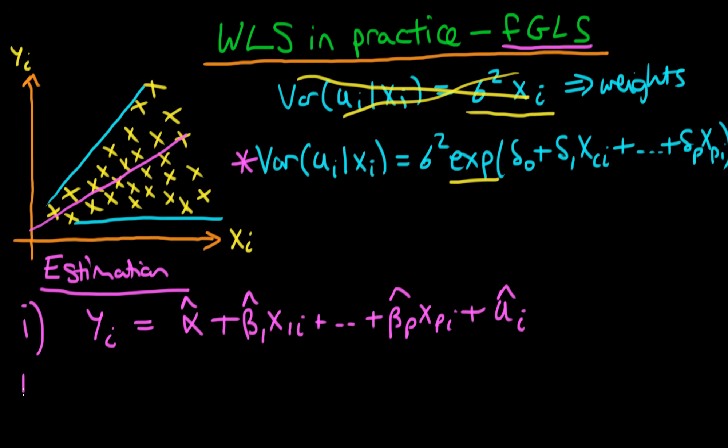The second step is to then run a regression of the log of these estimated errors, but it's not just the log of the estimated errors, it's the log of the estimated errors squared. We run a regression of that on the various x variables, so that's delta_0 + delta_1 times x1i all the way through to delta_p times xpi.